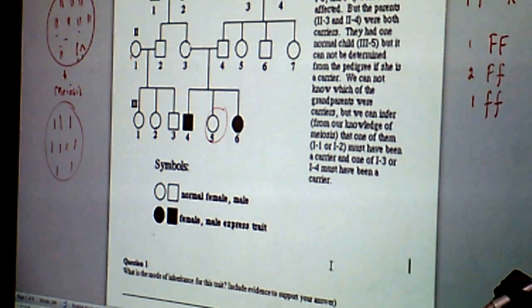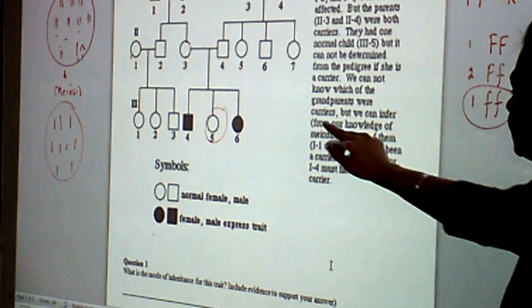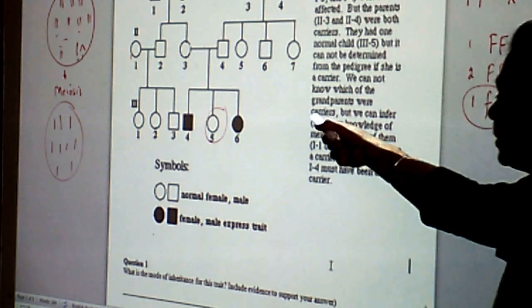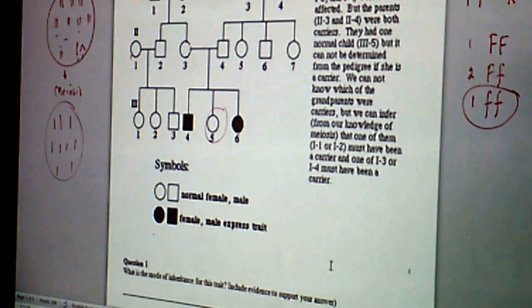And because it's autosomal recessive, this situation would make this person affected. So what's the probability that this person will be affected? Either write 25% or write 1 out of 4. Did you understand?